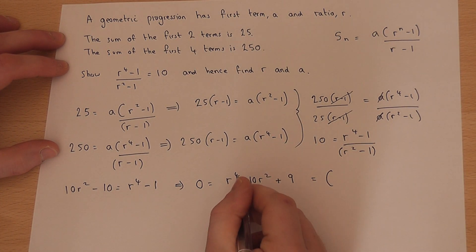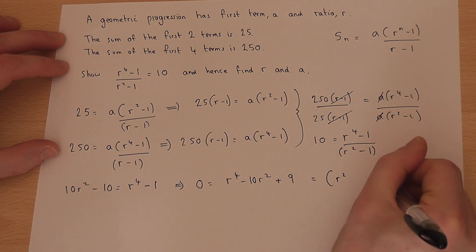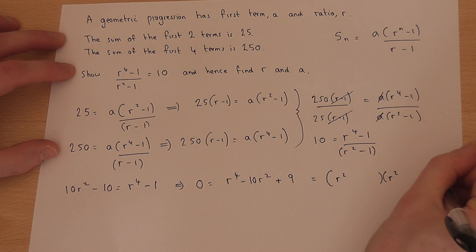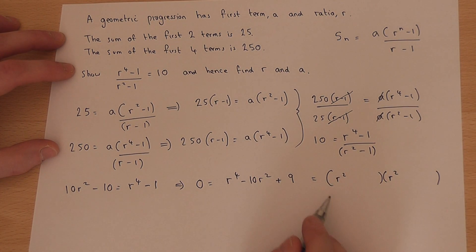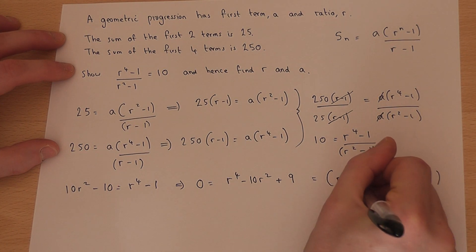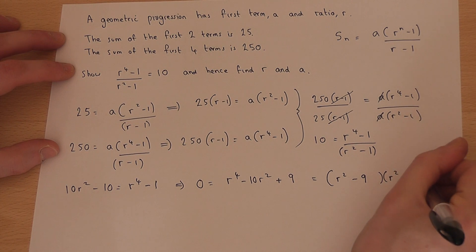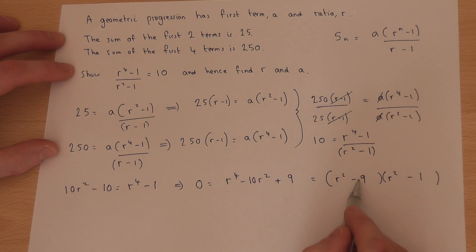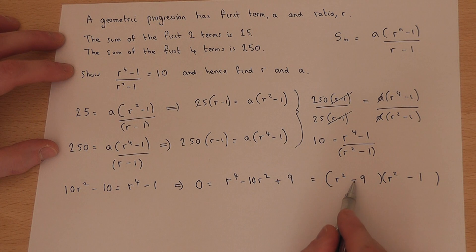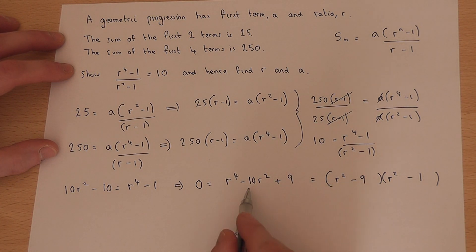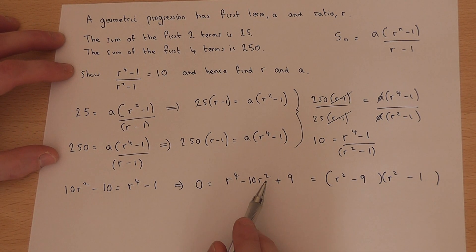Now to get r⁴ requires r² and r². To get plus 9 and minus 10 requires minus 9 and minus 1. Minus 9 times minus 1 is plus 9, and minus 9 take away 1 is minus 10.